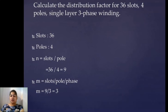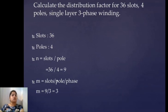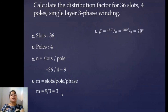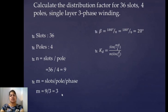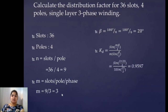Next, we calculate m — slots per pole per phase. Slots per pole is already 9, so we divide by the number of phases. Since it is 3-phase, dividing by 3 gives m as 3. Then we calculate beta: beta equals 180 divided by N, and N is 9, so beta equals 20 degrees. With m and beta known, substituting into the distribution factor equation kd equals sine(m·beta/2) divided by m·sine(beta/2), we get kd equals 0.9597.